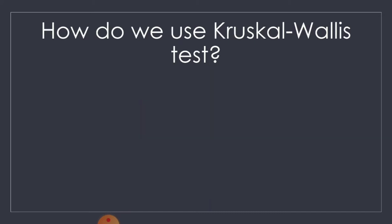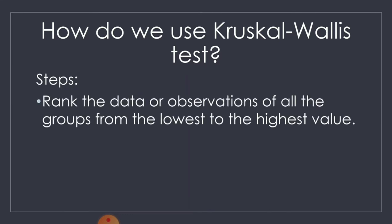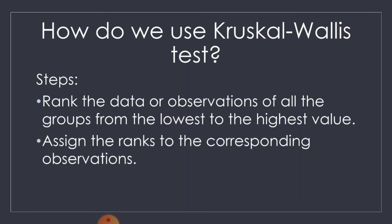How do we use the Kruskal-Wallis test? We apply the following steps. First, rank the data or observations of all the groups from the lowest to the highest value. Next, assign the ranks to the corresponding observations. Then, get the summation of R sub 1, summation of R sub 2, up to the summation of R sub n.